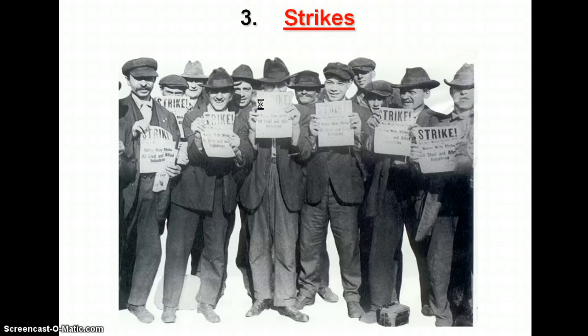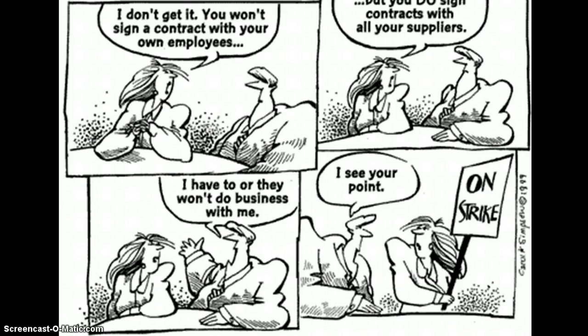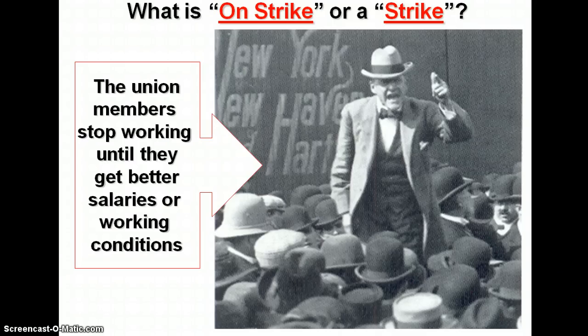A strike is one of the tools that a union has — certainly not the only one — but strikes are the most dramatic and the riskiest. If the owner wants to hold out, they could hire a scab or just wait and fire you, putting your whole life at risk. It's easy enough to say you'll go on strike, but it's a lot harder when your family's depending on your wage. Here's another political cartoon: 'You won't sign a contract with your own employees, but you do sign contracts with all your suppliers.' 'I have to, or they won't do business with me.' A strike is when people in the union stop working until they get what they want — better salaries or working conditions — sometimes with success, but often with failure.